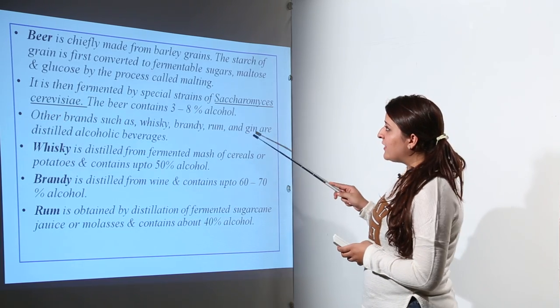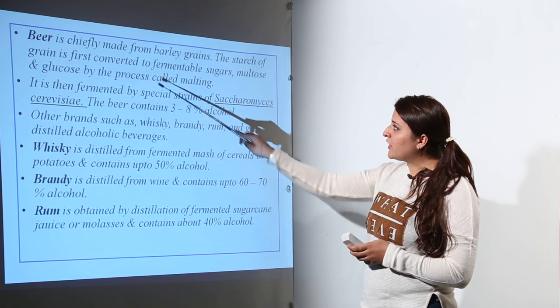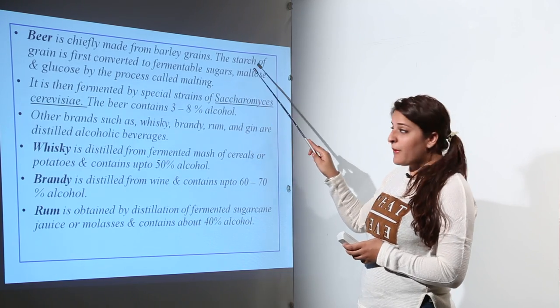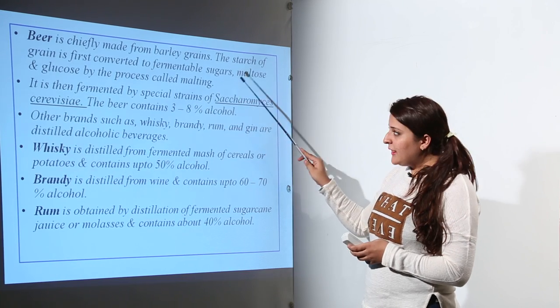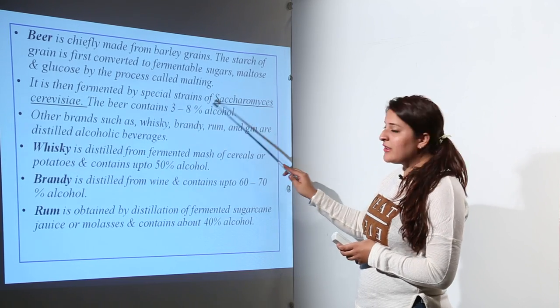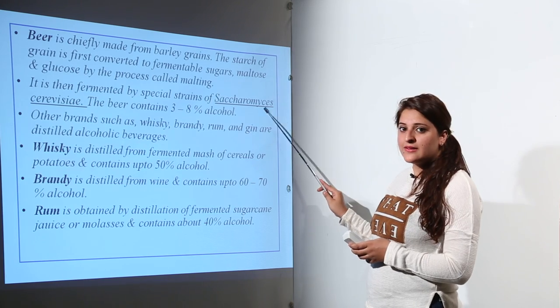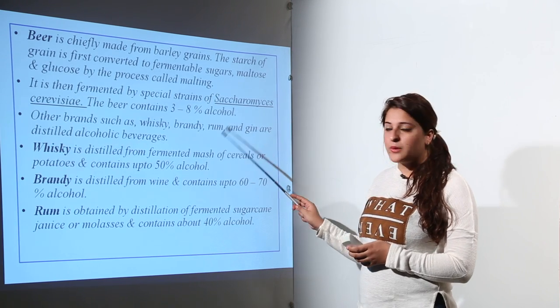Beer is made from barley grains. The starch is first converted to fermentable sugars—maltose and glucose—through a process called malting. Then it's fermented by special strains of Saccharomyces. Beer contains 3 to 8 percent alcohol.